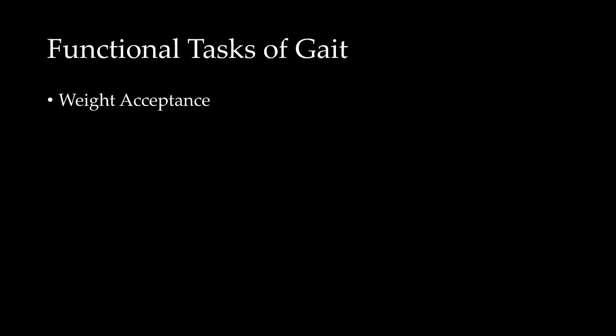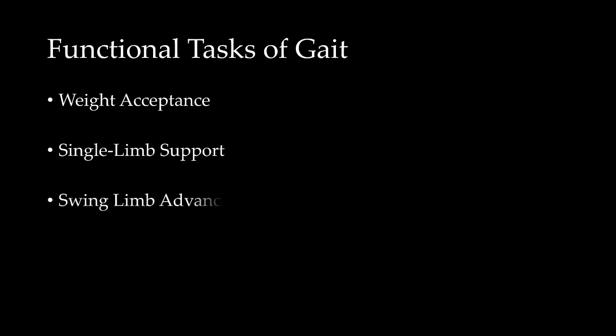Now let's go over some of the functional tasks associated with gait. The first is weight acceptance — we have to be able to put our weight onto that particular limb. Next, we have to put all of our weight onto that limb so that we can take the other limb and swing it forward in order to move. So we have three functional tasks during gait: weight acceptance, single limb support, and swing limb advancement.